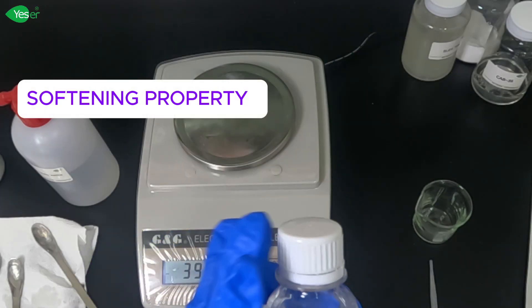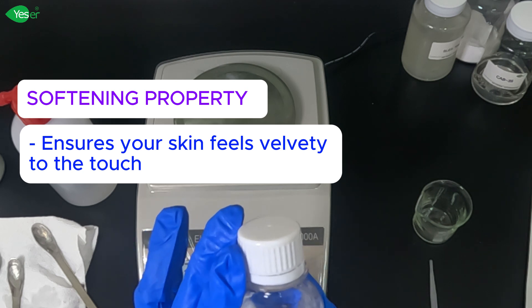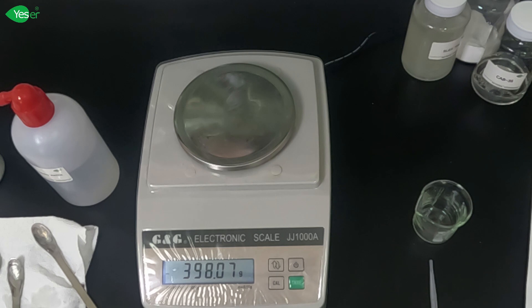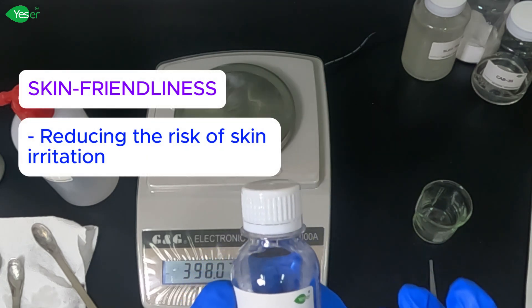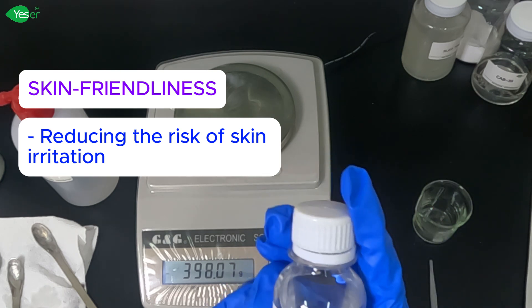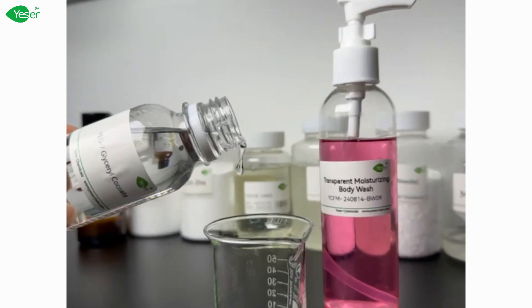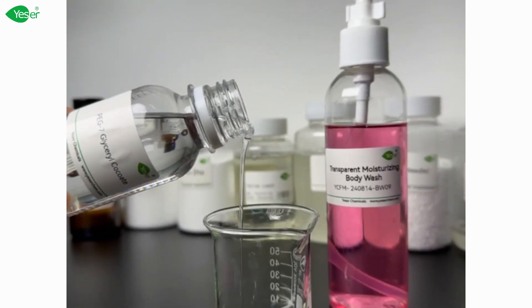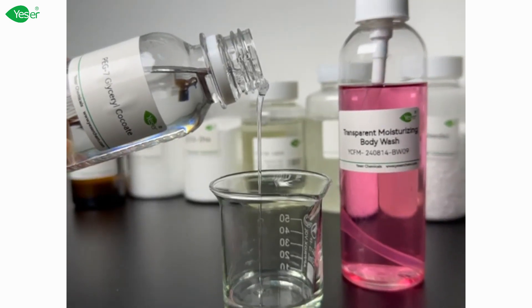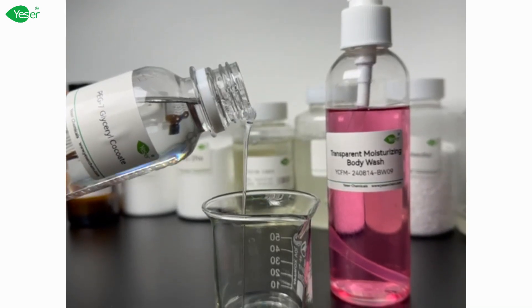Next is its softening property. This ingredient not only cleanses but also softens the skin, ensuring that your body feels smooth and velvety to the touch. Lastly, its skin friendliness. PEG7 is gentle on the skin, reducing the risk of irritation while enhancing the overall skin feel of the body wash. Its mildness makes it perfect for everyday use, even for those with sensitive skin. PEG7 works well with other ingredients in our formulation to provide a luxurious lather that cleanses effectively while deeply moisturizing and softening your skin.